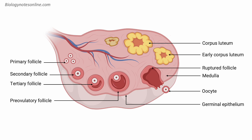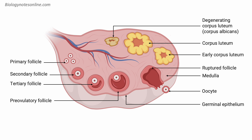If fertilization occurs, the corpus luteum continues to function. If not, it degenerates into a scar-like tissue called the corpus albicans. The germinal epithelium is a layer of cells that covers the surface of the ovary. The medulla, located in the center, contains blood vessels and nerves that supply the ovary with nutrients and oxygen.